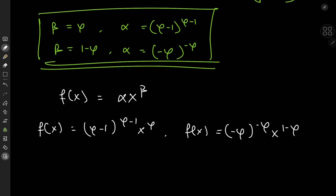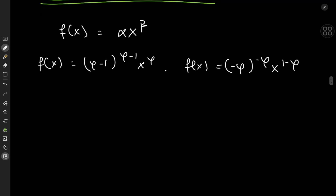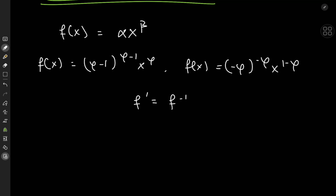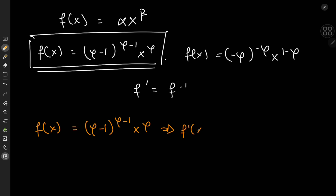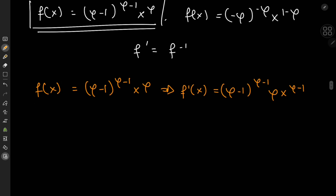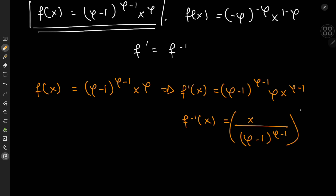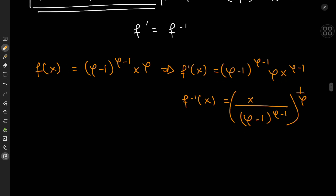The appearance of the golden ratio here is beautiful, and it almost seems like a necessity given the nature of the problem. Let me verify the first solution. The derivative is (φ−1)^(φ−1)·φ·x^(φ−1). The inverse function is x^(1/φ) divided by (φ−1)^(φ−1) raised to the 1/φ power. These two don't look equal yet, but they will once we use properties of the golden ratio.